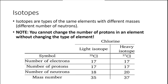Isotopes are atoms of the same element with a different number of neutrons. In a neutral atom, the number of protons equals the number of electrons. Chlorine has 17 protons and, when neutral, 17 electrons. For chlorine-35, the mass number (protons + neutrons) is 35, so 35 − 17 = 18 neutrons. For chlorine-37, 37 − 17 = 20 neutrons.